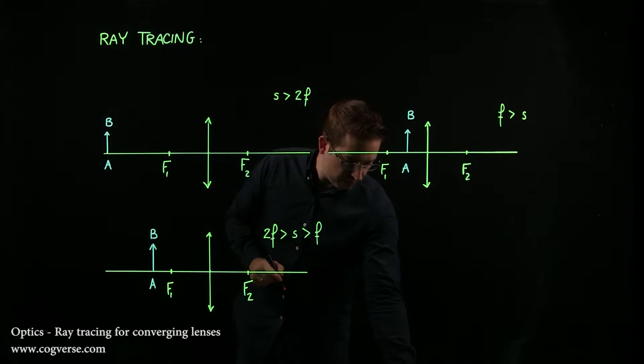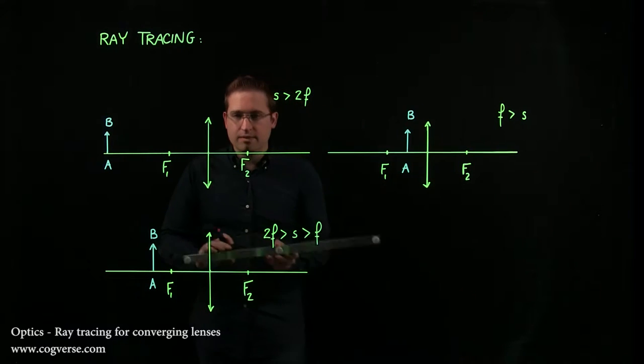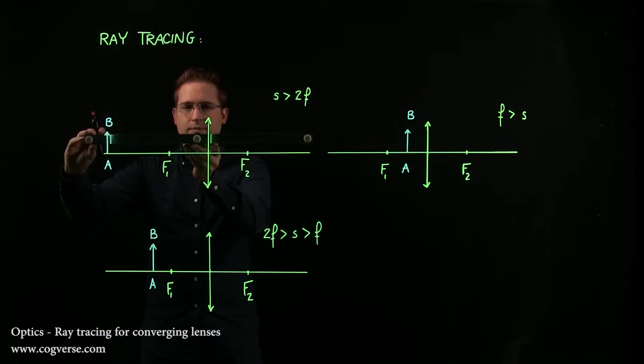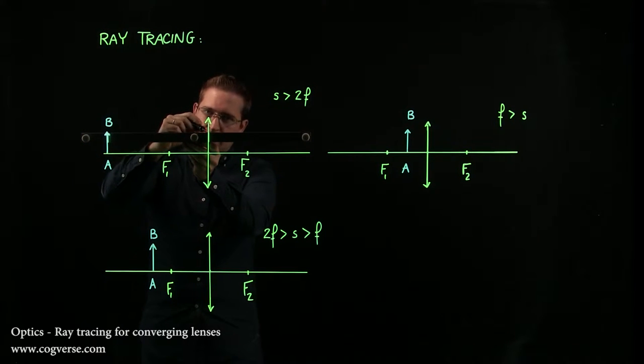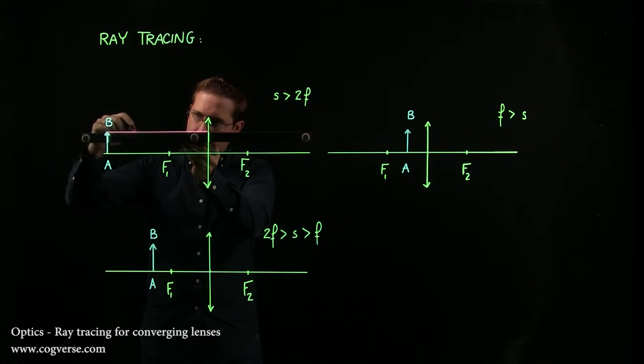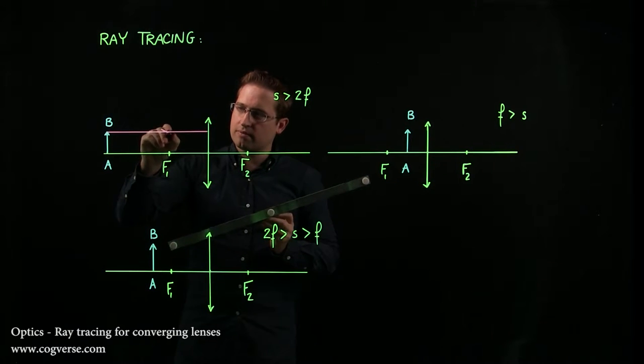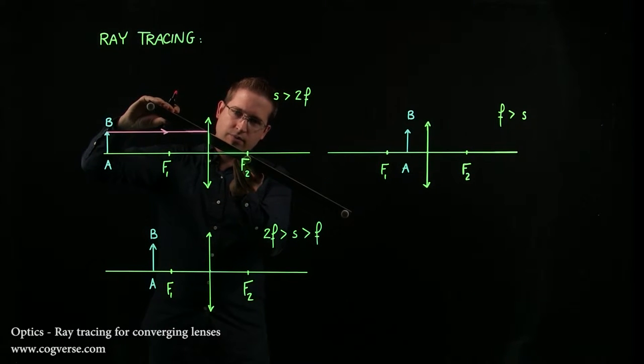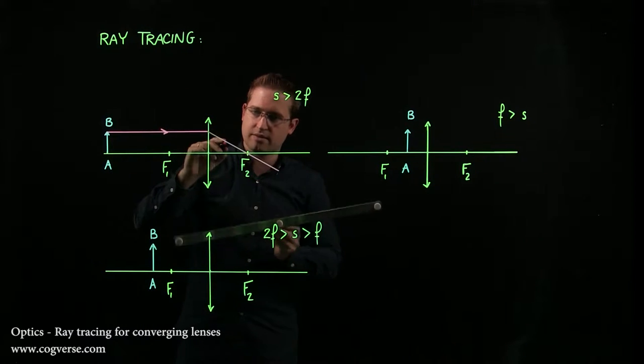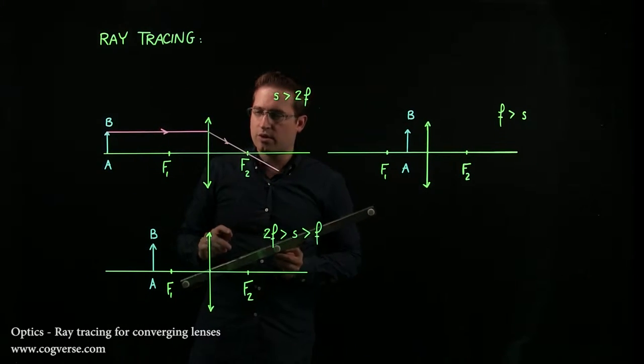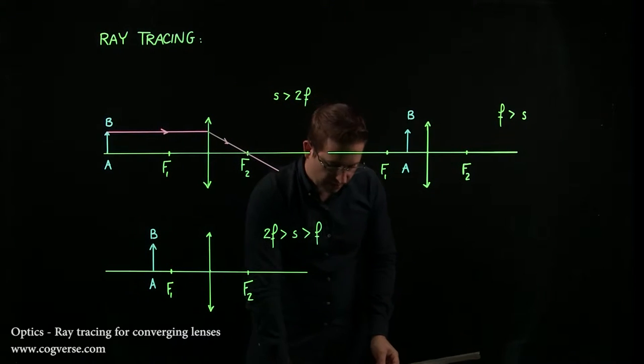The first rule is that any ray of light that comes in parallel to the axis hits the lens and emerges through f2. So you line it up with f2, goes through the lens, and there you go. That's the first rule.